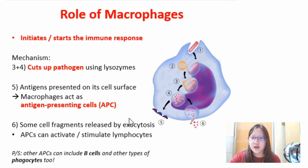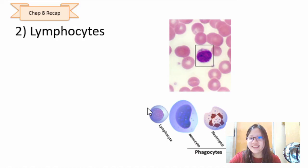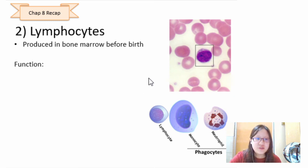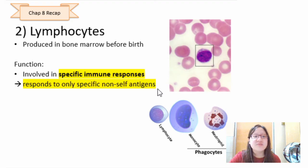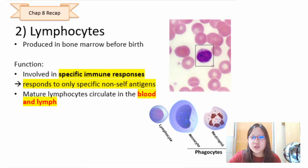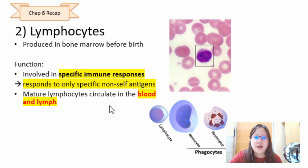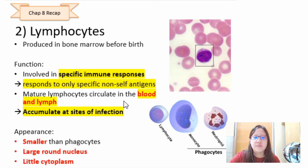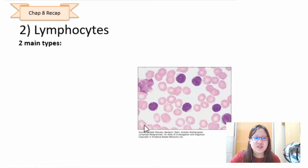Lymphocytes are produced in the bone marrow before birth. They are involved in the specific immune response and only respond to specific non-self antigens — if the receptor on a lymphocyte is not complementary to a particular antigen, that lymphocyte will not be activated. Lymphocytes circulate in the blood and lymph, have a high concentration in lymph nodes, and accumulate at sites of infection.